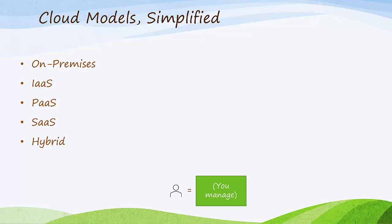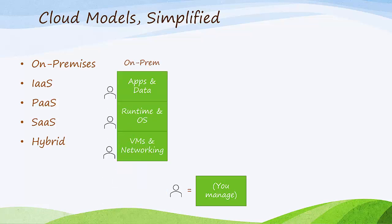Let's talk about the different types of cloud models that are available. You may be familiar with on-prem environments, where you have different servers on-premises. In such a situation, you are in charge of everything. You manage the apps and data, the runtime and OS, and everything in between such as the middleware. You also maintain the virtual machines, the physical machines, networking, and the hardware storage and everything else.